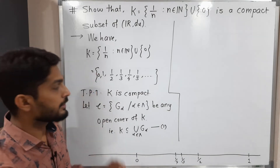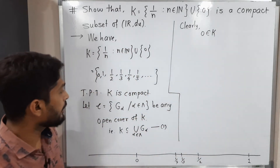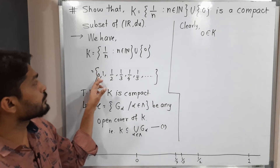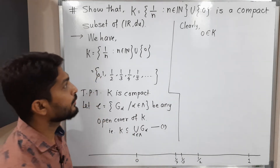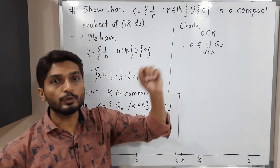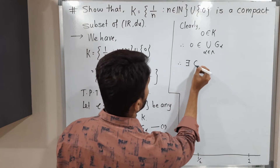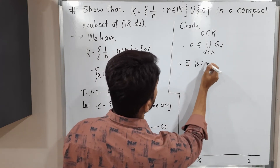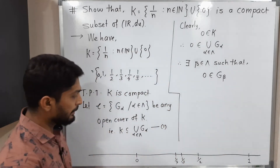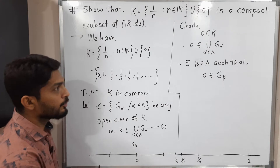Clearly, 0 belongs to K, and K is a subset of the union of G_α. So therefore 0 belongs to that union. That means there is some set G_β which covers 0. So therefore there exists some β ∈ Λ such that 0 ∈ G_β. It means there is some set G_β — I don't know what it is, but suppose this is our set G_β such that 0 ∈ G_β.